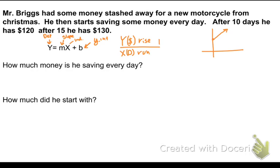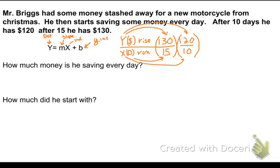Well, I know that I had one hundred and thirty dollars after fifteen days, and I know that I had one hundred and twenty dollars after ten days. And I have to ask myself, what is the change in rise, and what is the change in run? What I have here are two points, a y value and an x value. And all I have to do is treat it like slope, treat it like rise over run.